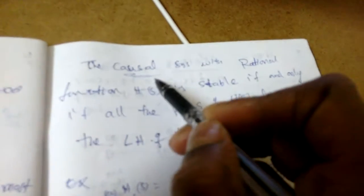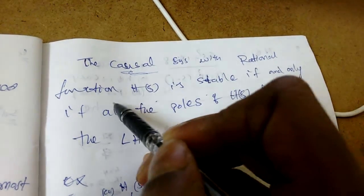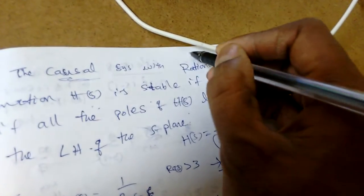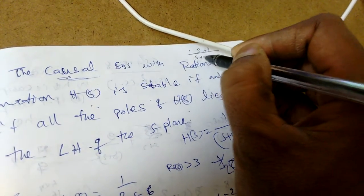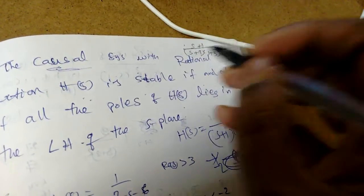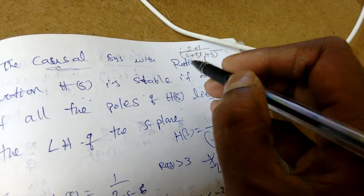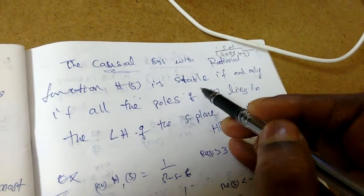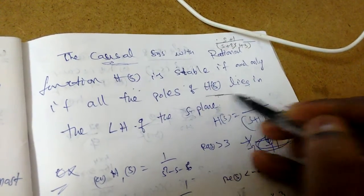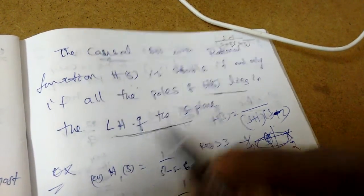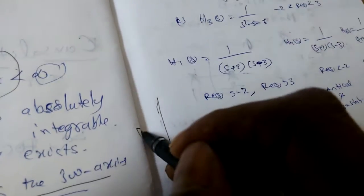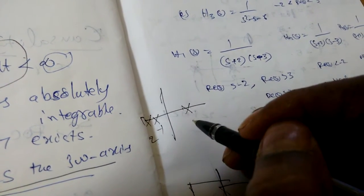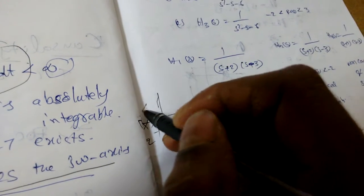Another way of determining stability: if the system is causal with a rational transfer function H(s) — where rational means the degree of the numerator should be less than the degree of the denominator, for example (s+1) / [(s+2)(s+3)] — then the causal system with rational H(s) is stable if and only if all the poles of H(s) lie in the left half of the s-plane. If even one pole is in the right half, the system is unstable.